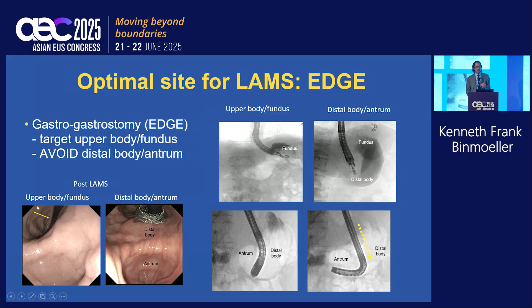This is the way it should look. In retroflexion, this is the incisura — it really looks no different than the way you would pass a duodenoscope through the mouth. You're looking back towards the fundus. If you see your LAMS in the distal body, then you're likely to have problems.